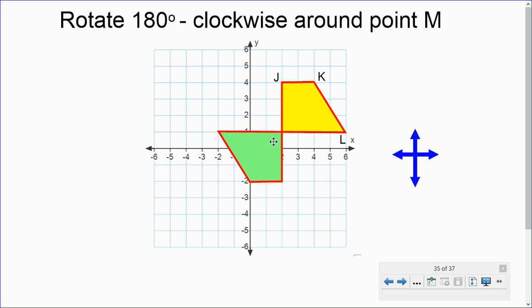So point M is still there. And if you want to go to J, 1, 2, 3 boxes, as we said, there is J prime. And you can count the distance for the other points as well.